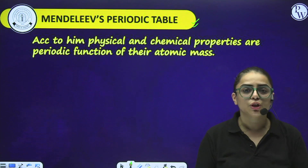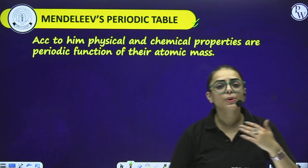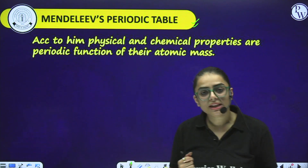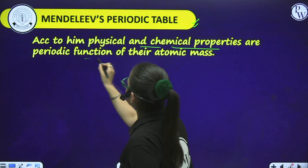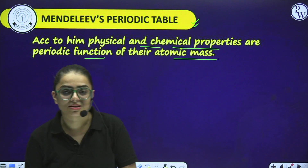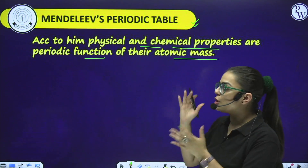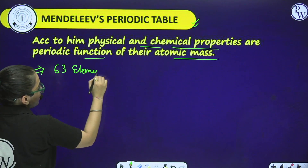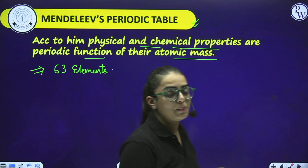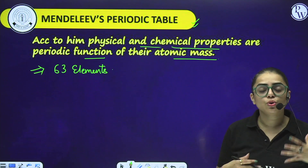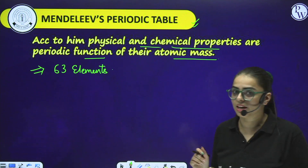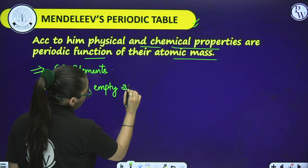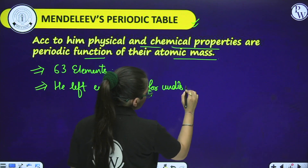That means the properties are a periodic function of their atomic weight. When you arrange the elements, you arrange them with regard to their atomic weight or atomic mass. Mendeleev followed this concept - he stated that physical and chemical properties are a periodic function of their atomic mass. According to Mendeleev's Periodic Table, he arranged up to 63 elements. He was the first scientist at that time to arrange 63 elements in his periodic table, which was a wonderful achievement. He also left some spaces for undiscovered elements - this was an important key concept.